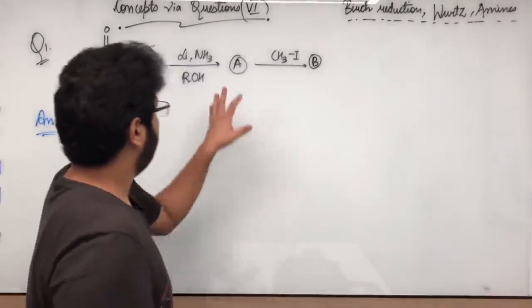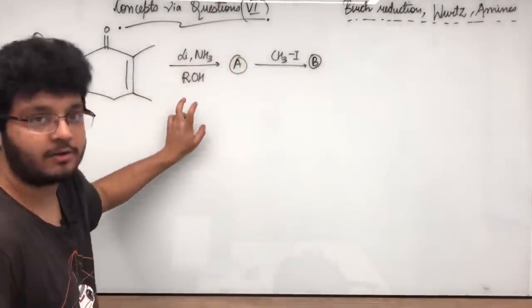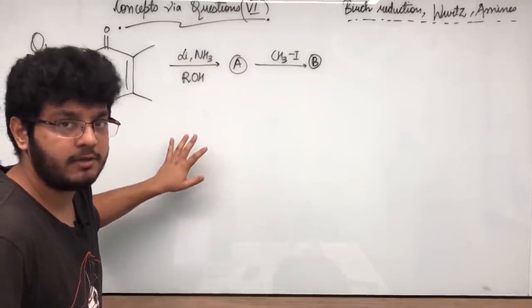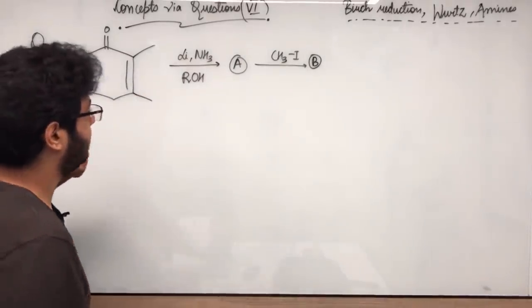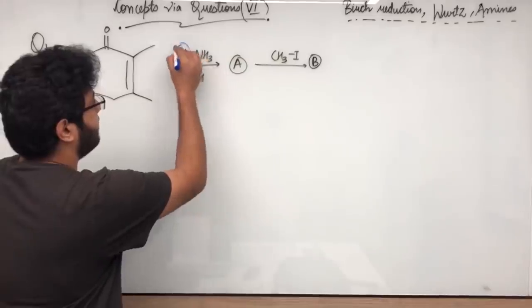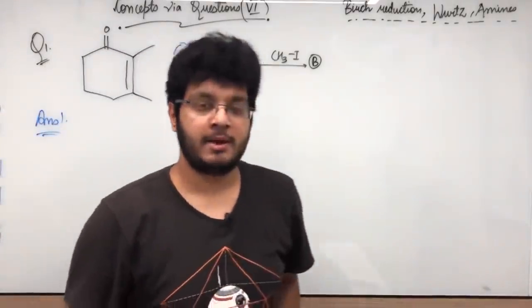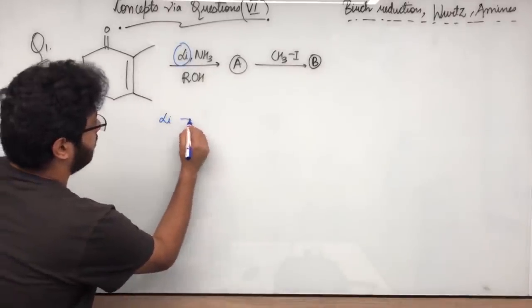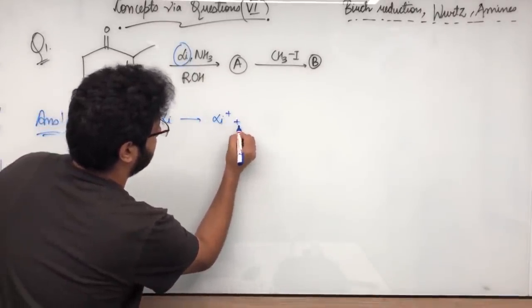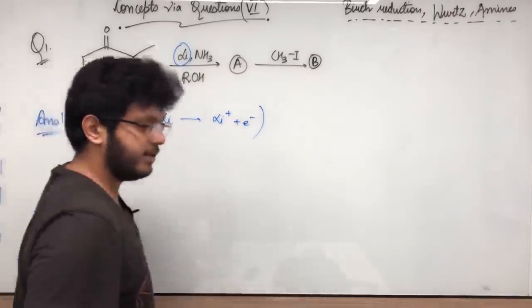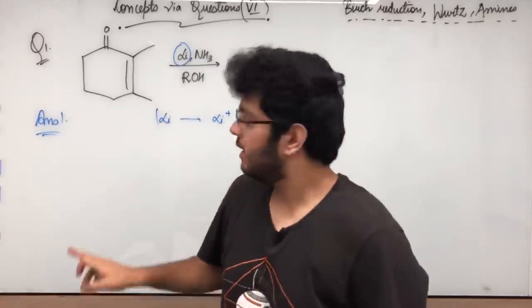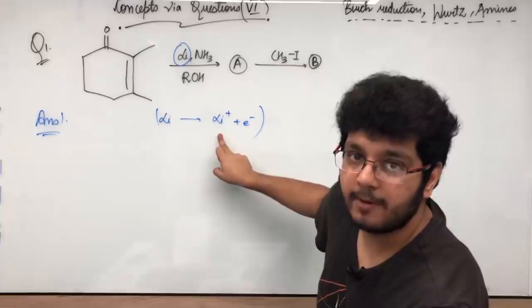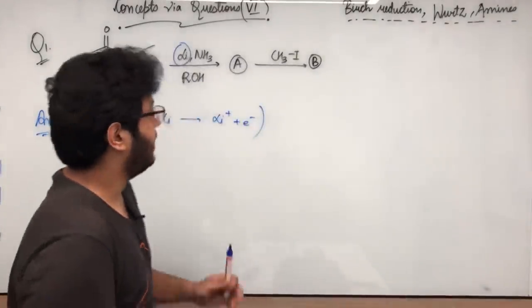So we have been given Birch Reduction. What is the mechanism? How to think of the mechanism? Here I have metal. What is the work of the metal? The work of the metal is to provide the electrons. Why do you want to provide the electrons? So that it can attain the noble gas configuration.